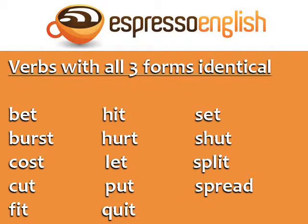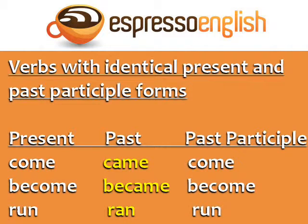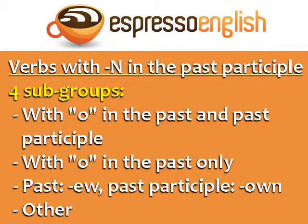Other verbs with all three forms identical include many common verbs. The next group is verbs with identical present and past participle forms — the only different form is the past. Come, came, come. Become, became, become. Run, ran, run.